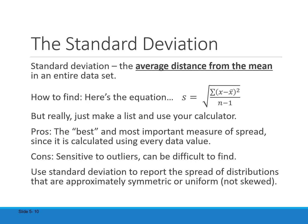The last measure of spread is standard deviation — the building block of this entire course. To boil it down to one sentence: standard deviation is the average distance from the mean for an entire data set. We're never going to calculate this by hand; we'll let our calculator do it. For the same reason mean is the best measure of center, standard deviation is the best measure of spread — it's calculated using every data value. It is sensitive to outliers, so we use mean and standard deviation when we have unimodal and symmetric distributions. For skewed distributions, we use median for center and IQR for spread.